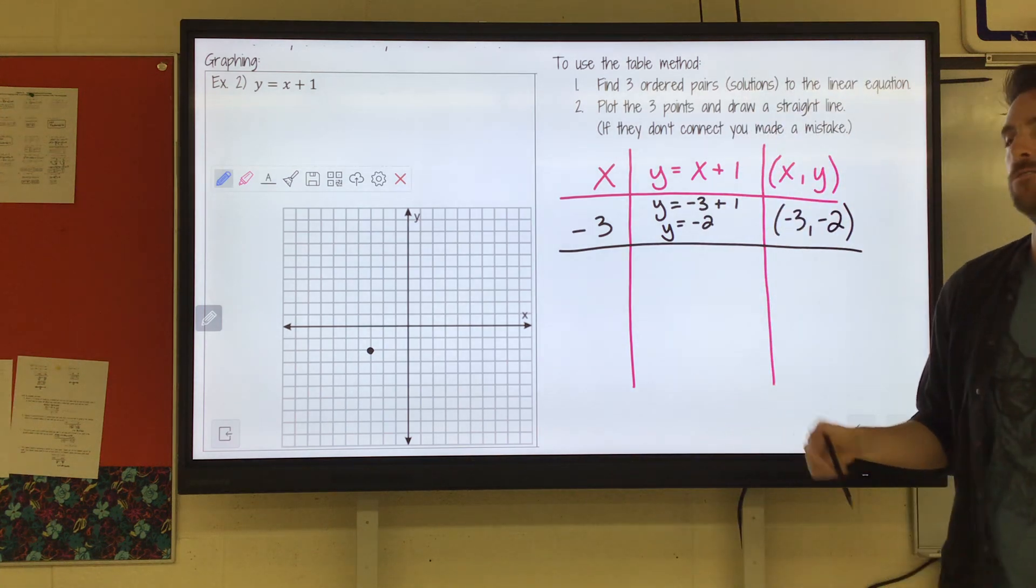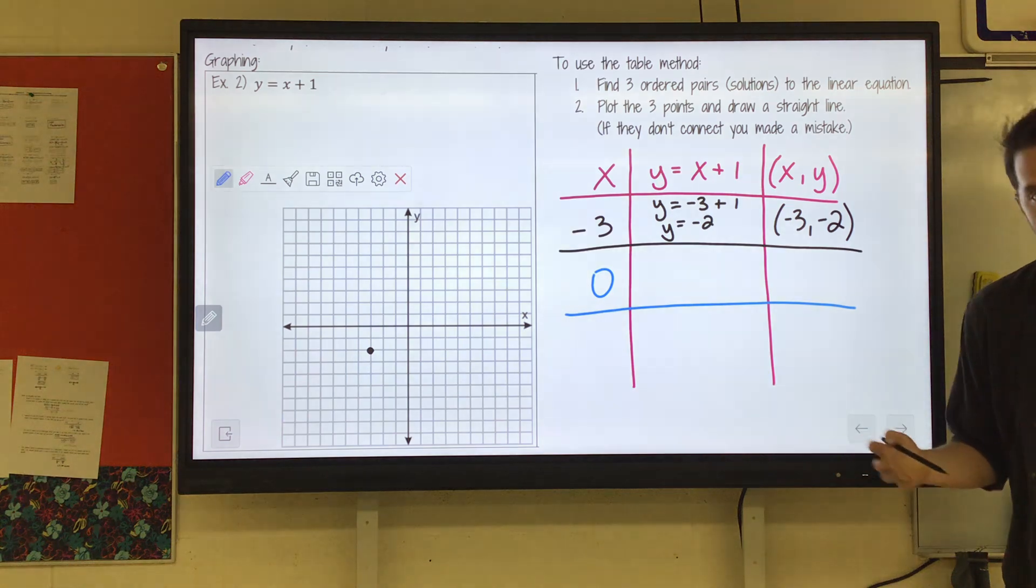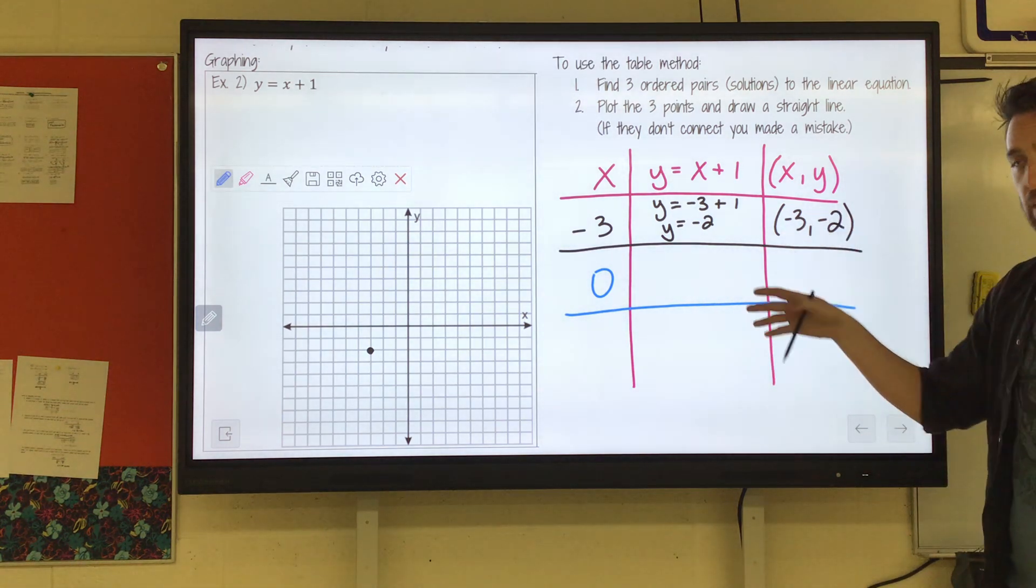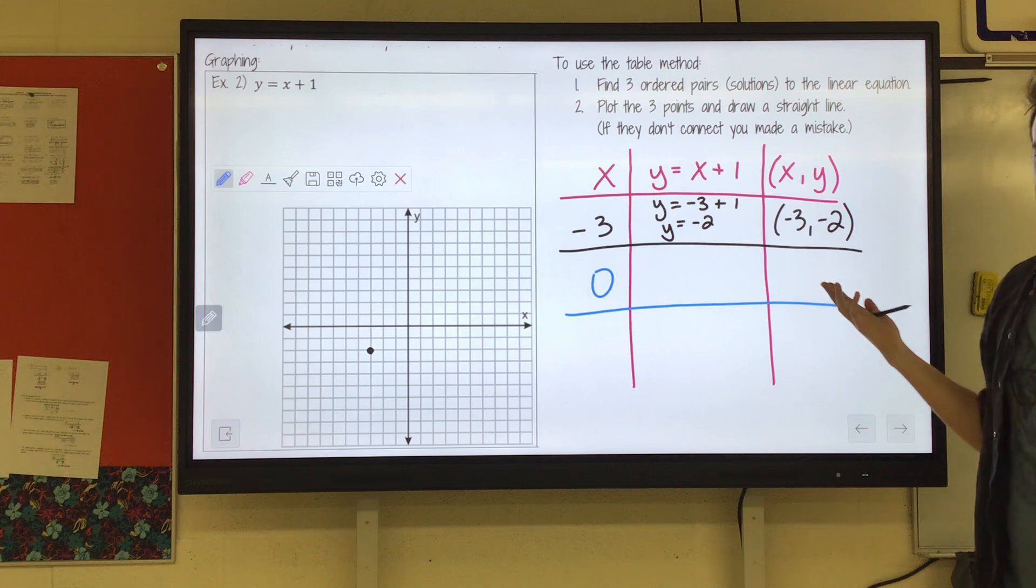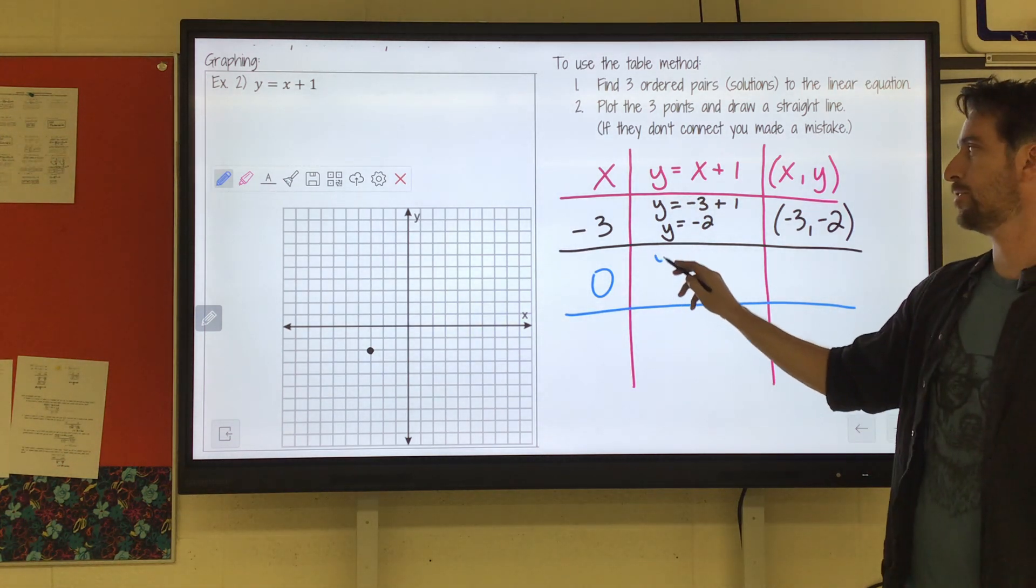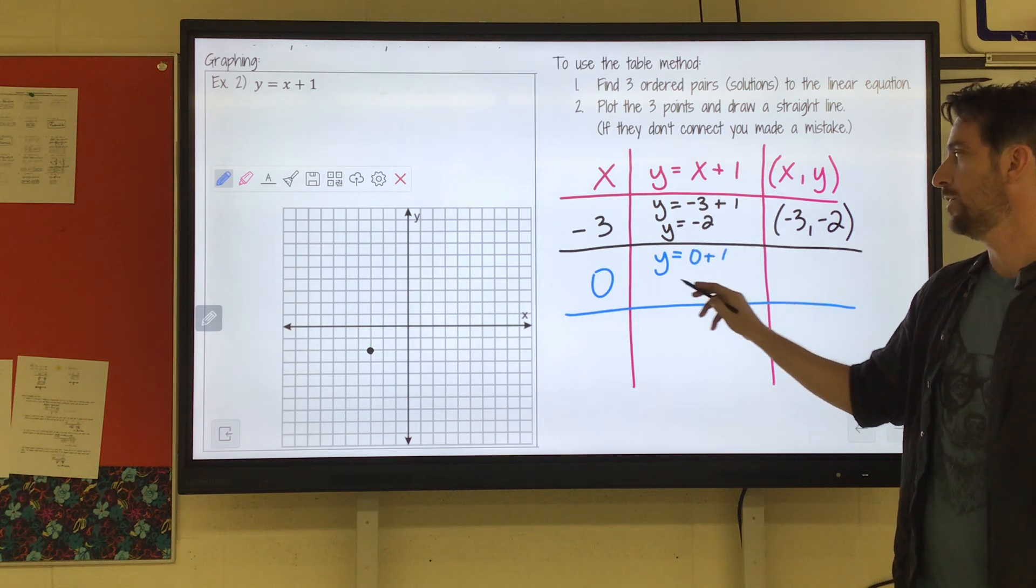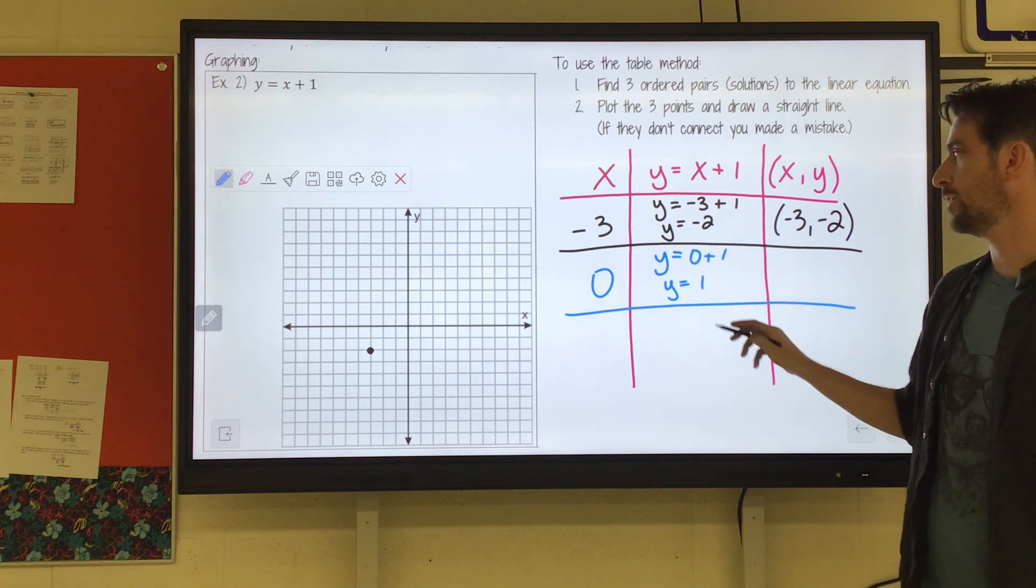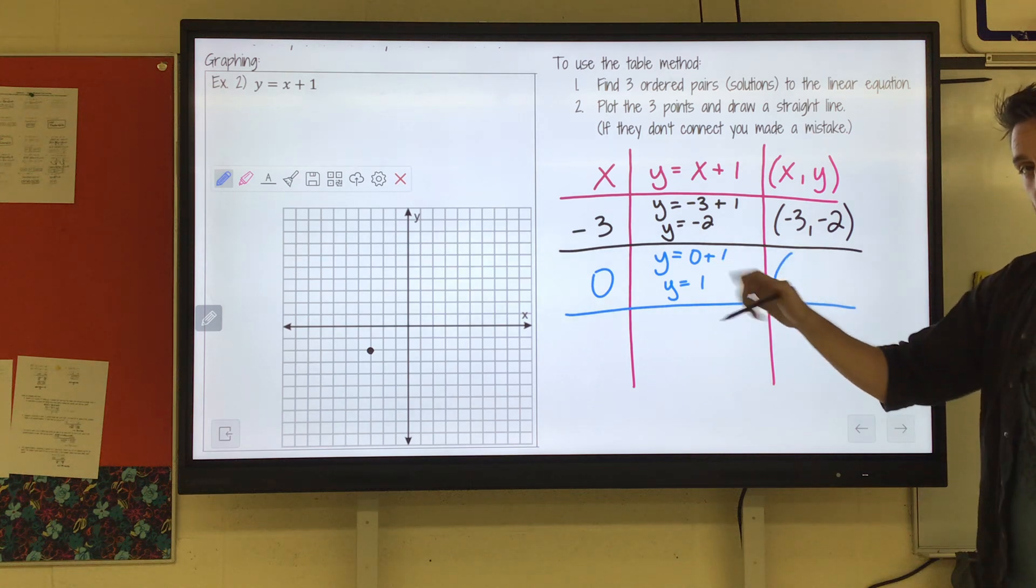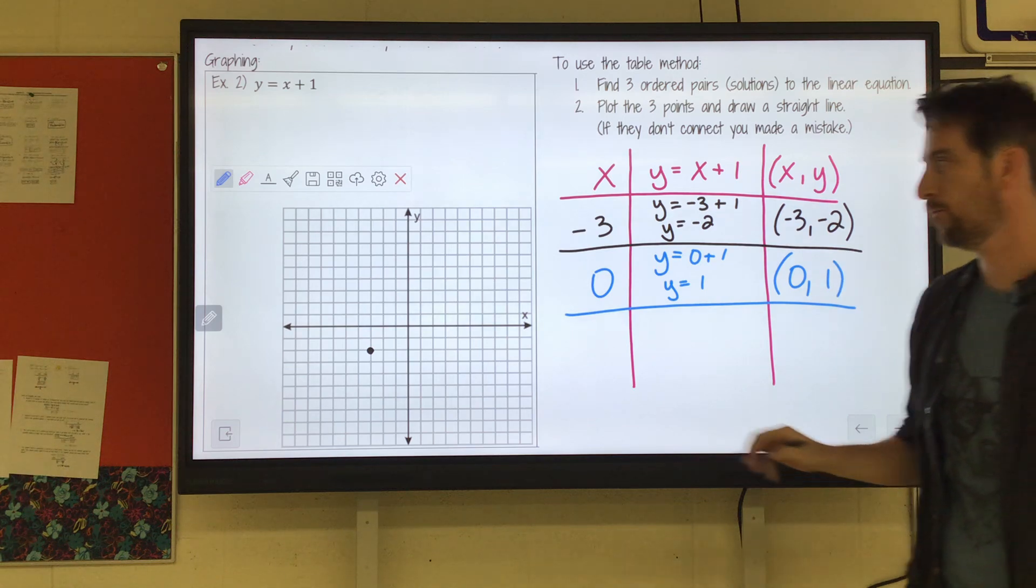I like to use 0. And by the way, you could pick any numbers. I just like to pick one that's negative. I like to pick 0, and then I like to pick a positive one, just so they're spread out a little bit. So if we pick 0, y equals x, which is 0, plus 1. 0 plus 1 is just 1. So we chose 0, that would be our x coordinate. Our answer was 1, so we plot 0, 1.